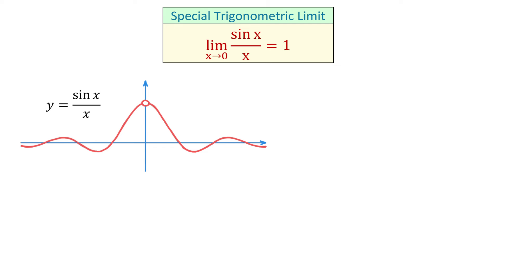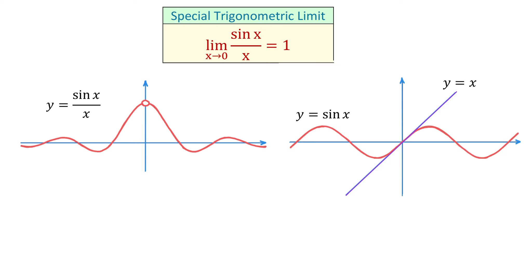In other words, the farther we go from the center, the smaller the waves get. Now notice that when we graph the numerator, which is sin(x), and the denominator, which is x, we see that as x approaches 0 the sin function behaves more and more like this line. Around 0, these two functions become nearly indistinguishable, and that is why the ratio of the values of these two functions as x approaches 0 gets closer and closer to 1.